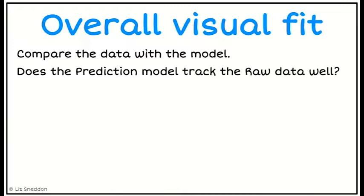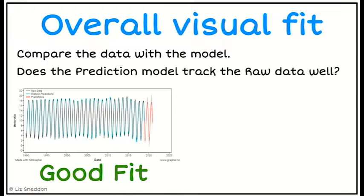To look at the overall visual fit first, we want to look at the black line in our graph, which is the raw data, and the prediction model shown in green, which is your historical prediction. We want to see if that green line follows the black line well — is it lining up and matching? The one we can see here is a pretty good fit; the green line is overlapping the black line most of the time.